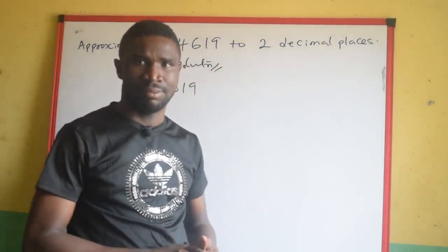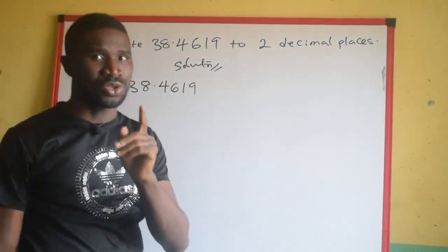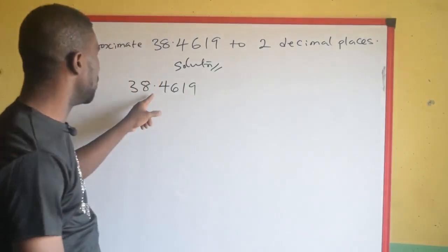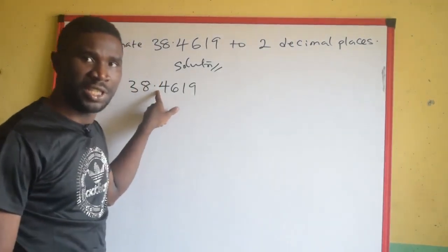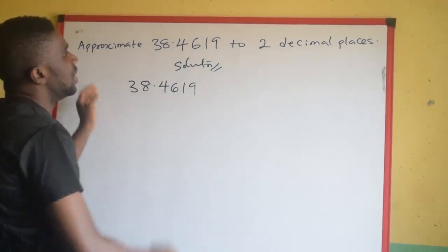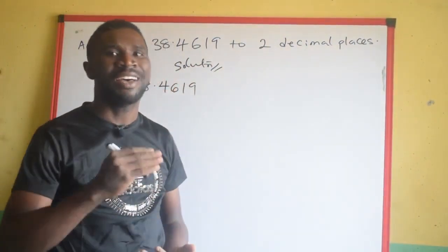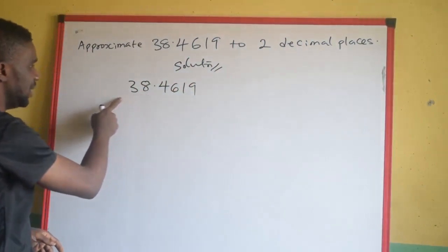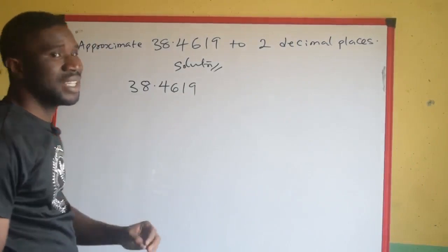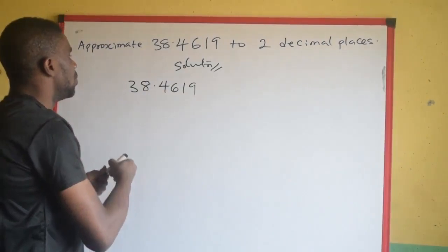I have not done anything to it yet. Now what are we supposed to do? Your interest is to locate the decimal point. Look at the decimal point here — we locate it. Now the question says to 2 decimal places, which means count 2 numbers after the decimal point. We count towards the right: 1 and 2. So the two numbers after the decimal point are 4 and 6, and here we will stop.